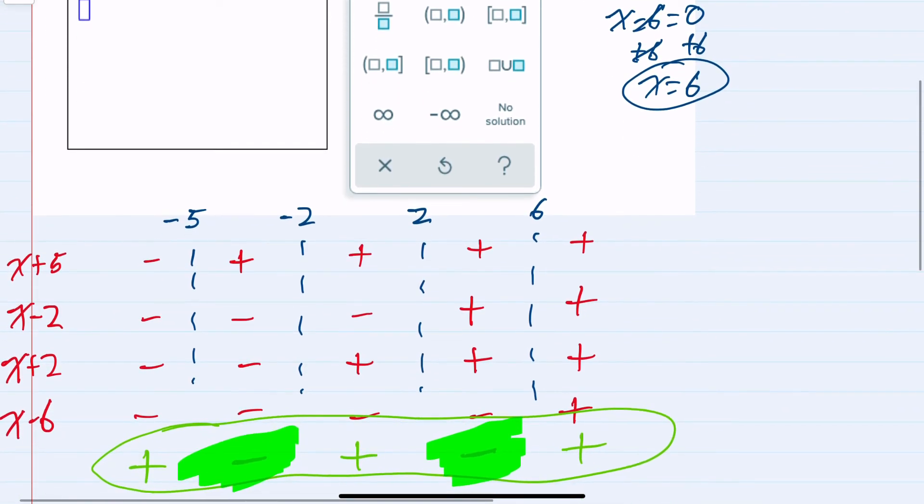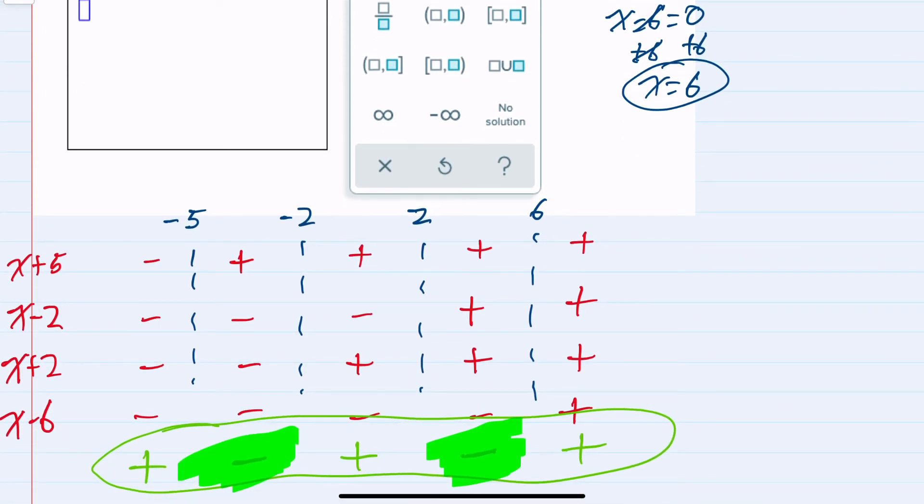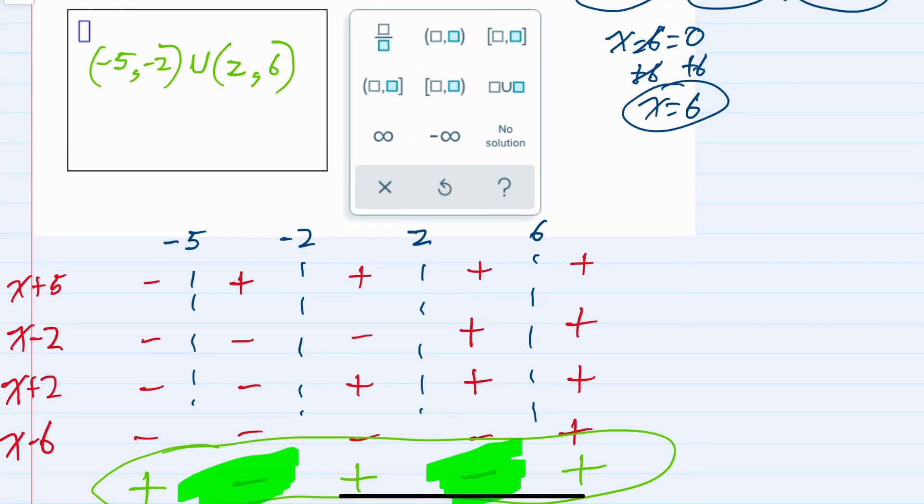My range is going to be negative 5 to negative 2, not using the endpoints, and I would have a union of that. And my other area where it is negative is between 2 and 6, so 2 to 6, also not using those endpoints. x values in this range would satisfy this inequality.